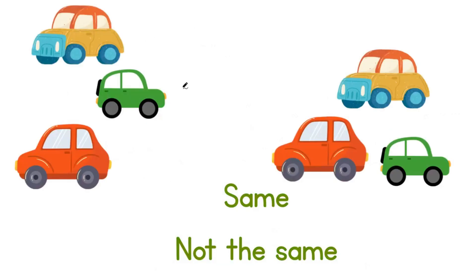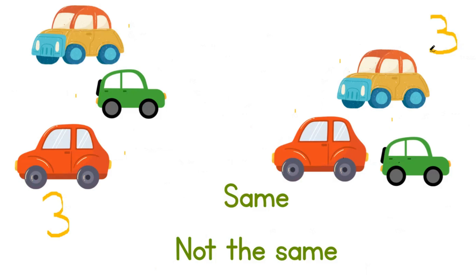Let us look at these toy cars. How many toy cars are there on the left? There is 1, 2, 3. There are 3 on the left. How many toy cars are there on the right? 1, 2, 3. There are also 3 toy cars on the right. Are they the same cars? Yes, they are. Are they the same number? Yes, they are.